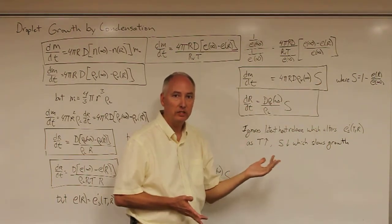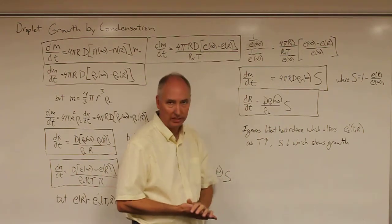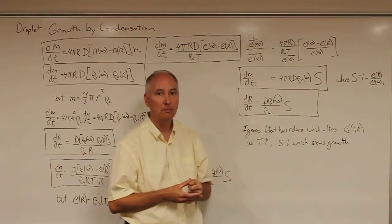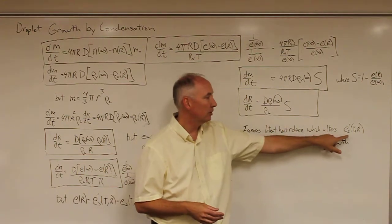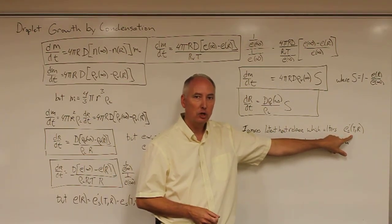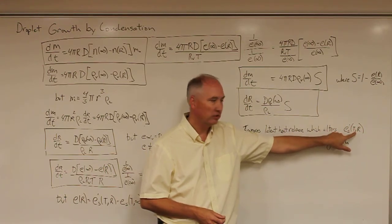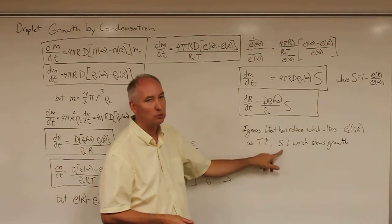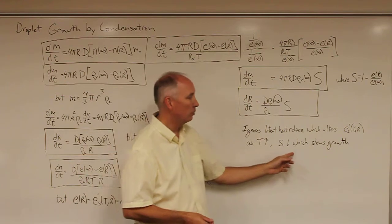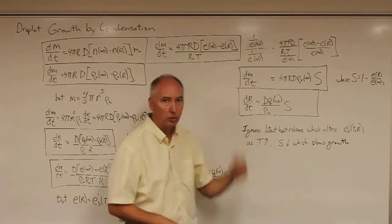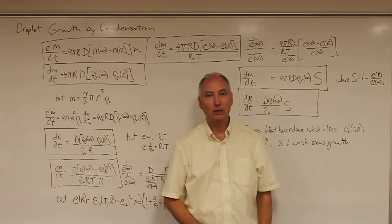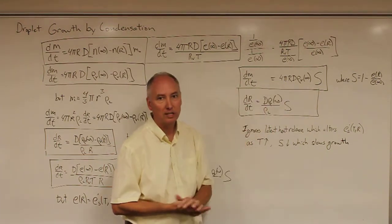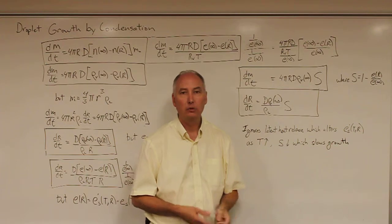It's important to note that when we derive these equations, we ignore the latent heat release. As condensation occurs, it actually warms the surface of the droplet, which alters the saturation vapor pressure over the curved solution droplet by changing the temperature. As temperature increases, the supersaturation decreases, which slows the growth. As a result, these growth equations represent the maximum growth rate of a droplet exposed to a given supersaturation; the actual growth rate will be somewhat smaller.